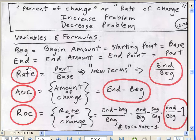Here's our formula for rate. Oh, but wait a second, we already know how to do that one: Part divided by Base. But guess what? The new terms we're going to use for an increase-decrease problem, or a rate of change problem, is End divided by Begin. And this will give us a rate base that we'll be able to use.